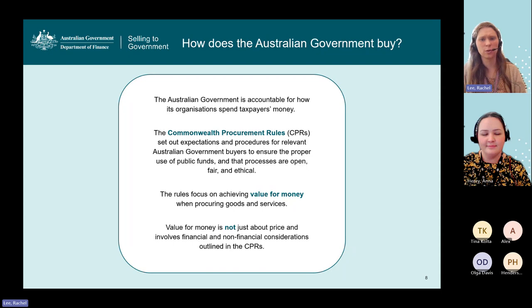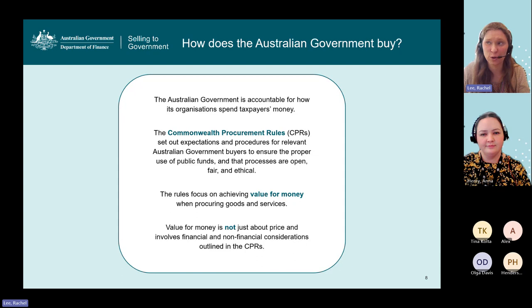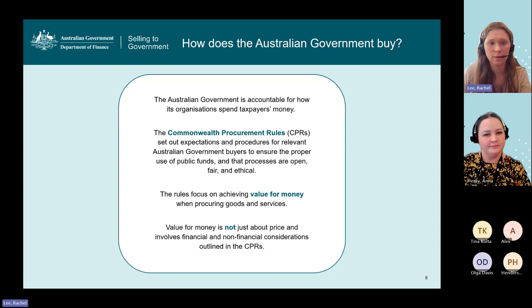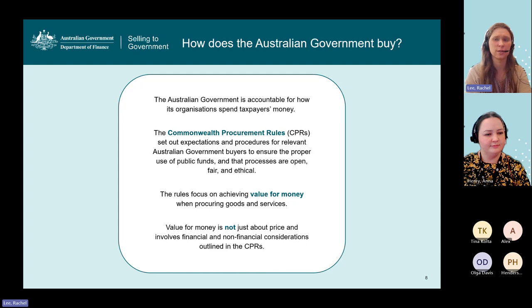Now we'll go through how the Australian Government actually approaches suppliers and makes purchasing decisions. The Australian Government is accountable for how its organisations spend taxpayers' money. We have our Commonwealth procurement rules, which set out expectations and procedures for relevant Australian Government buyers to ensure the proper use of public funds and that processes are open, fair and ethical. The rules focus on achieving value for money when procuring goods and services — and value for money isn't just about price; it includes financial and non-financial considerations specifically outlined in the Commonwealth procurement rules.